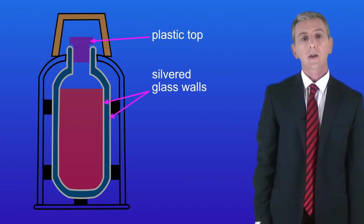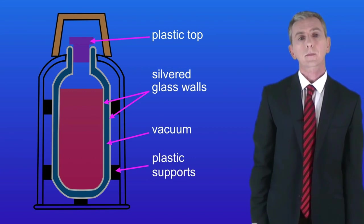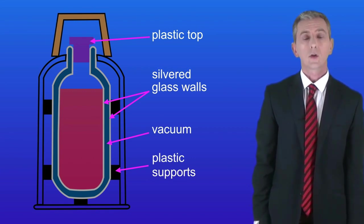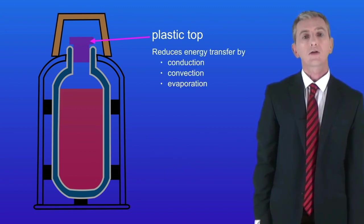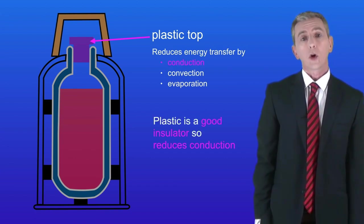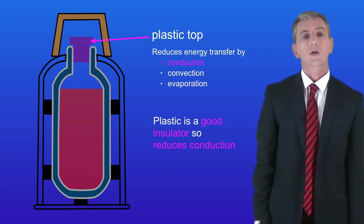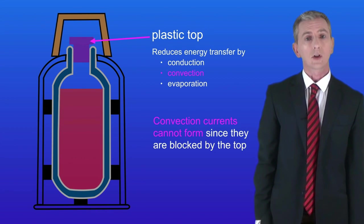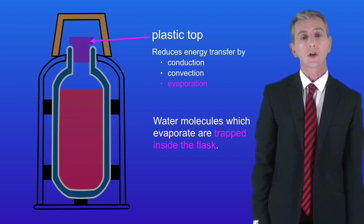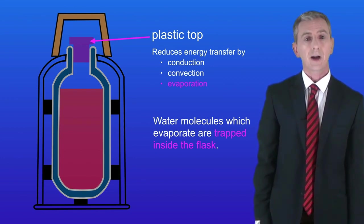Here is a drawing of the inside of a vacuum flask. We can see that we have a plastic top, silvered glass walls, a vacuum between the glass walls and plastic supports. We will start by looking at the plastic top. This reduces energy transfer by conduction, convection and evaporation. First of all, plastic is a good insulator so that reduces conduction. Heat transfer by convection is reduced as convection currents are blocked by the top. And heat transfer by evaporation is reduced as water molecules which do evaporate are trapped inside the flask.